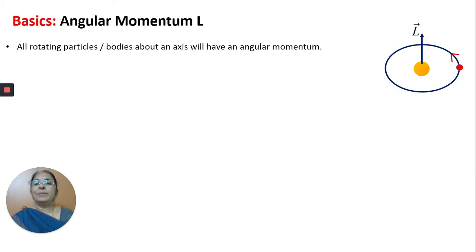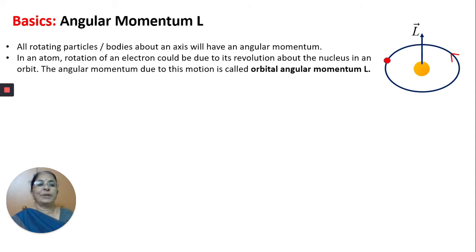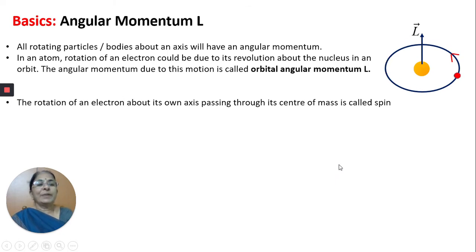What is angular momentum? All rotating particles or bodies about an axis will have an angular momentum. This electron is orbiting around the nucleus in the orbit and it will have an angular momentum directed perpendicular to the plane of the orbit. In an atom, an electron can have two types of rotations: one is revolution about the nucleus in an orbit, and the next is rotation of the electron about its own axis, called spin of the electron. Every rotation will contribute angular momentum to the electron.